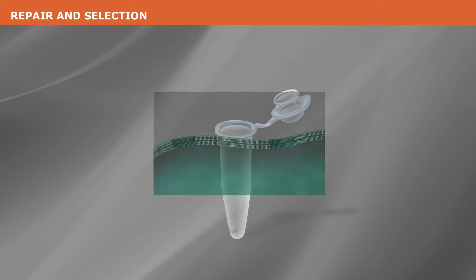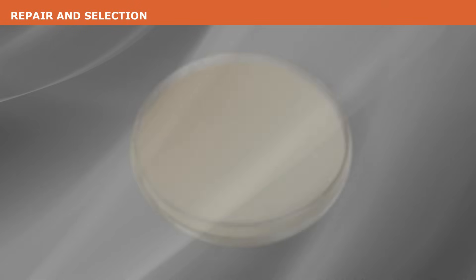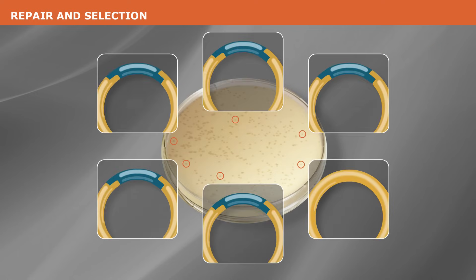Outgrowth of bacteria following transformation allows for repair and recovery of the cells in liquid medium without antibiotic. After outgrowth, the culture is spread on selective plates to isolate transformants containing the newly acquired DNA, which conveys antibiotic resistance.